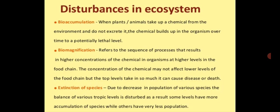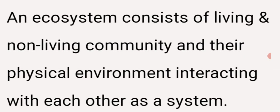Extinction of species: due to a decrease in population of various species, the balance of various trophic levels is disturbed. As a result, some levels have more accumulation of species while others have very little population. We know that an ecosystem consists of living and non-living communities and their physical environment interacting with each other as a system.